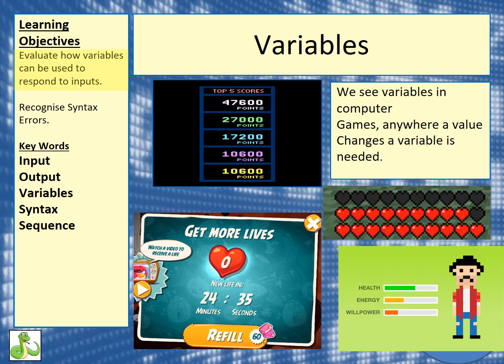Here are some variables you might have come across in games. You can see Angry Birds on the bottom left-hand corner. We've got new life in — we've got a time there, that's a variable that's changing. That will count down until we get a new life. We've got number of lives as well, currently at zero, but we can change that. Also in this game, there are some gems you can collect to refill your lives — but only if you have 60 gems. You can also see Minecraft examples on the right-hand side.